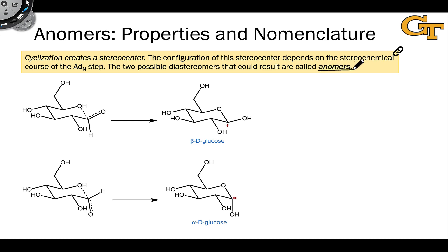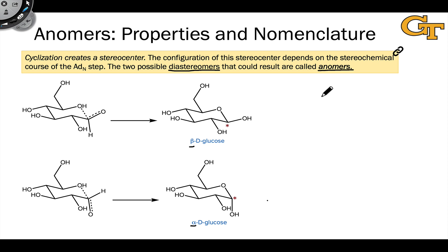Anomers are the diastereomers that result when an open-chain monosaccharide cyclizes to form a hemiacetal. The Greek letters alpha and beta denote the two possible anomeric forms of a monosaccharide. The alpha and beta nomenclature is best explained in the context of Fischer projections, so what I'd like to do now is draw Fischer projections of the alpha and beta anomers of glucose to clarify where the terms alpha and beta come from and what the rules are.